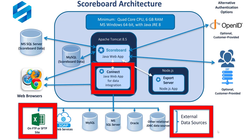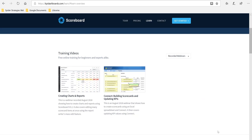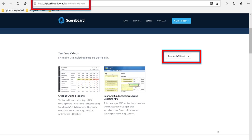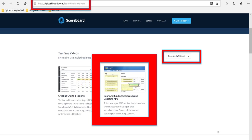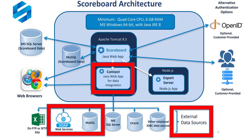Last month in August 2018, we did a Connect 101 web education where we focused on Excel-based external data sources, which we employed to both build and populate scorecards within Scoreboard. If you missed that presentation, it's available at kpidashboards.com on the Learn page. Under Recorded Webinars, you'll find the Connect Building Scorecards and Updating KPIs webinar. Today, we'll be focusing on a couple of new external data sources we can leverage through Connect to get data into your Scoreboard scorecards.